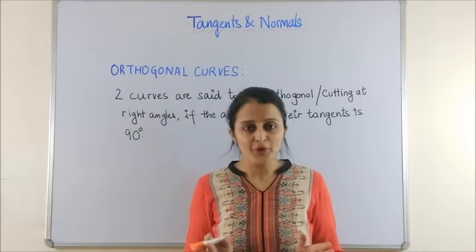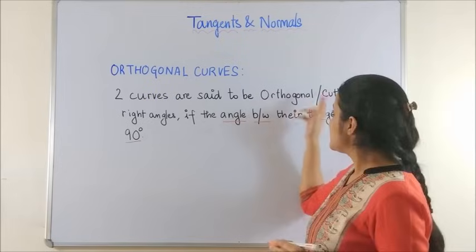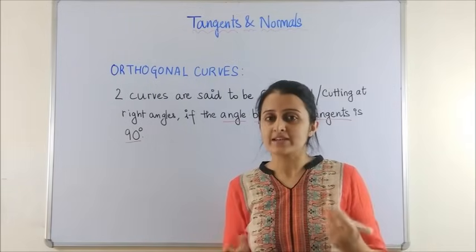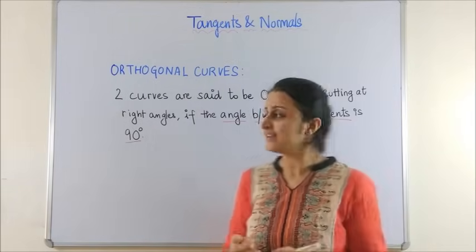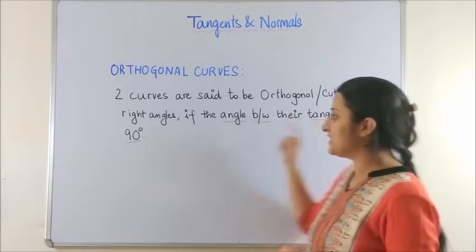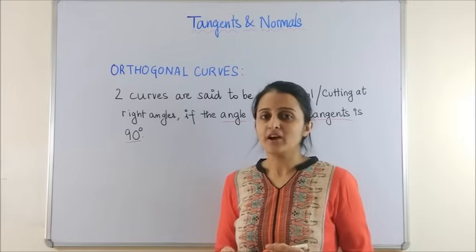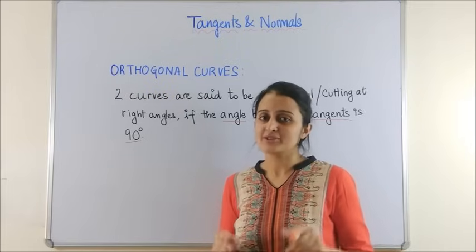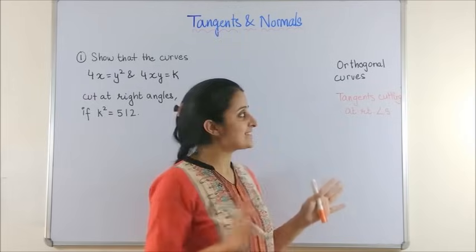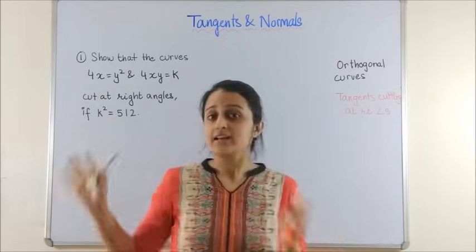Beginning with orthogonal curves. Two curves are said to be orthogonal, or in other words two curves are said to be cutting at right angles, if the angle between their tangents is 90 degrees. Let's see how we use this concept in the questions. Orthogonal curves are those whose tangents are cutting at right angles.